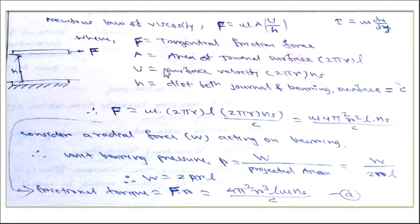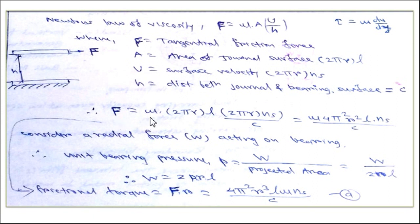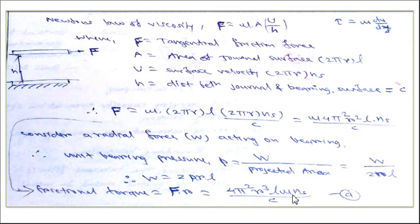F is the tangential frictional force, A is the area of the journal surface — circumference 2πR times length L — and u is the surface velocity 2πR·ns, with h equal to the clearance C. Substituting these values, the frictional force expression becomes F = μ · 4π²R²L·ns/C. This is the frictional force offered inside the bearing. The frictional torque is force times radius, giving T = 4π²R³L·μ·ns/C.